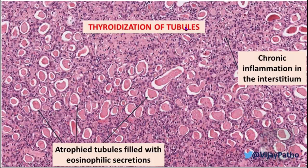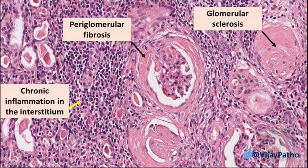Thyroidization of tubules refers to atrophied follicles filled with eosinophilic secretions, which resemble thyroid tissue. You also find chronic inflammation in the interstitium. Regarding glomerular changes in chronic pyelonephritis: initially there is periglomerular fibrosis — fibrosis around the glomeruli. Eventually there is sclerosis of the entire glomerulus, with dense eosinophilic material replacing it. So it begins with periglomerular fibrosis and ends with glomerular sclerosis.